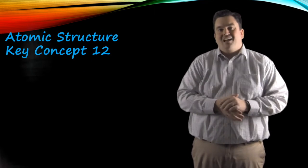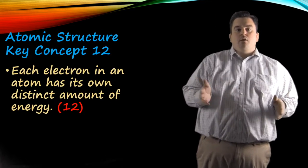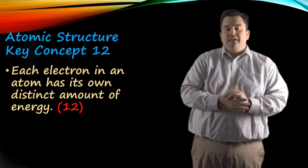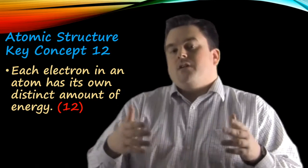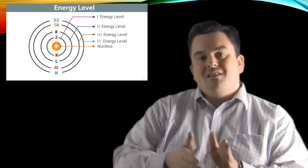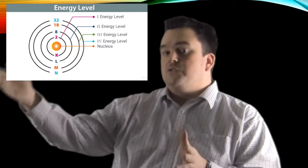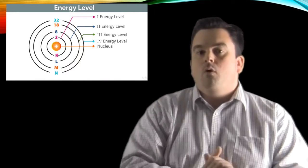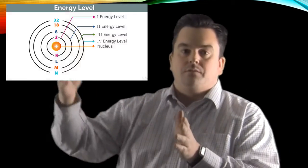Atomic structure, key concept twelve. Each electron in an atom has its own distinct amount of energy. So electrons in the first shell have their distinct amount of energy, where electrons in the second, third, fourth and so on have a little bit more energy than each successive electron.